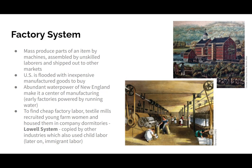The introduction of factory systems represented a major shift in where goods were produced. No longer made at homes or in small workshops, goods began to be produced in factories by machines, assembled by unskilled laborers, and shipped out to other markets. This flooded the U.S. with inexpensive manufactured goods. The abundant water power of New England made it a center for manufacturing. Textile mills recruited young farm women and housed them in company dormitories — the Lowell System, named after the Lowell Mill established in 1814. This was copied by other industries, which also used child labor and later immigrant labor.